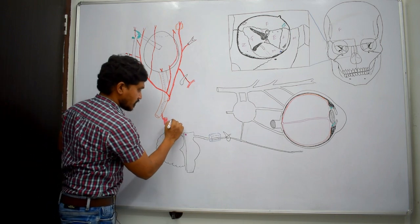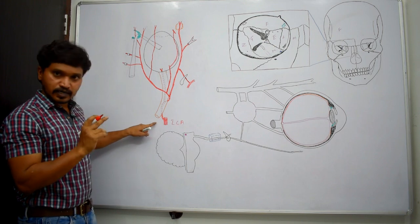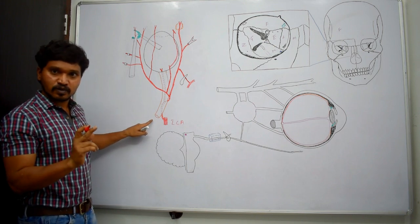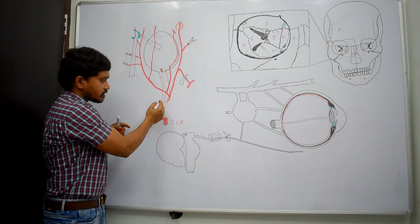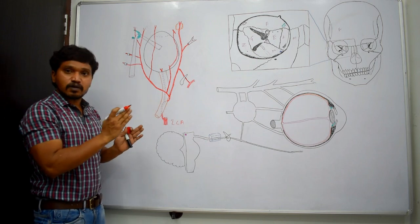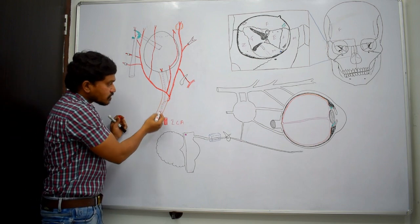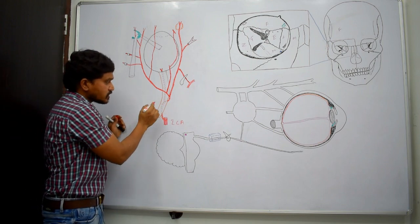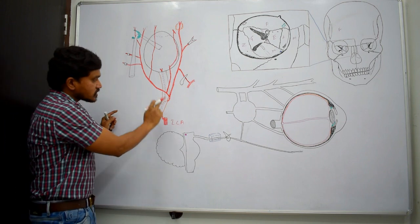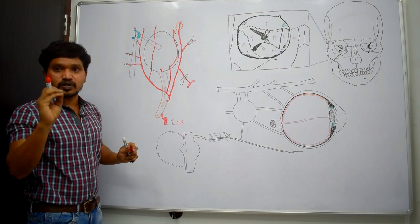It is branched from the internal carotid artery just medial to the anterior clinoid process at the optic canal. Along with the optic nerve, this ophthalmic artery also enters into the orbit through the optic canal. In the initial part of its course, it is present below and lateral to the optic nerve. These two structures are surrounded by a common dural sheath.